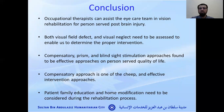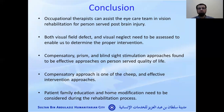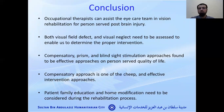In conclusion, occupational therapists can assist the eye healthcare team in visual rehabilitation. Both visual field defect and visual neglect need to be assessed in order to identify the correct intervention. Compensatory techniques, prisms, and blind sight stimulation are effective techniques when dealing with visual field defect. Compensatory techniques are among the most cost-effective interventions available, and patient and family education must be done to ensure maximum benefit for the person served.